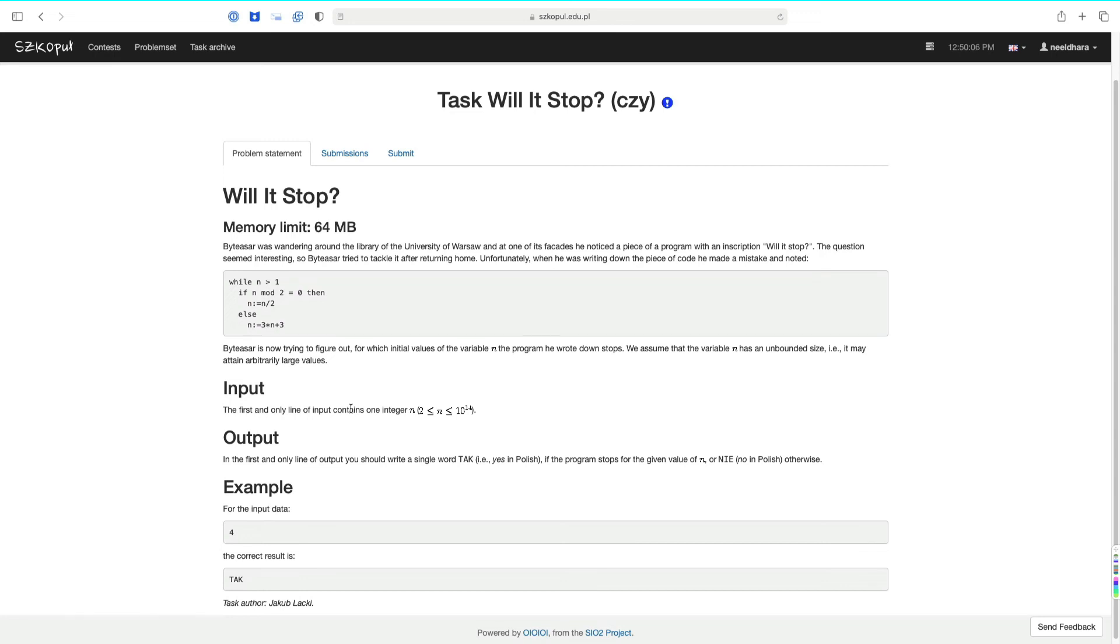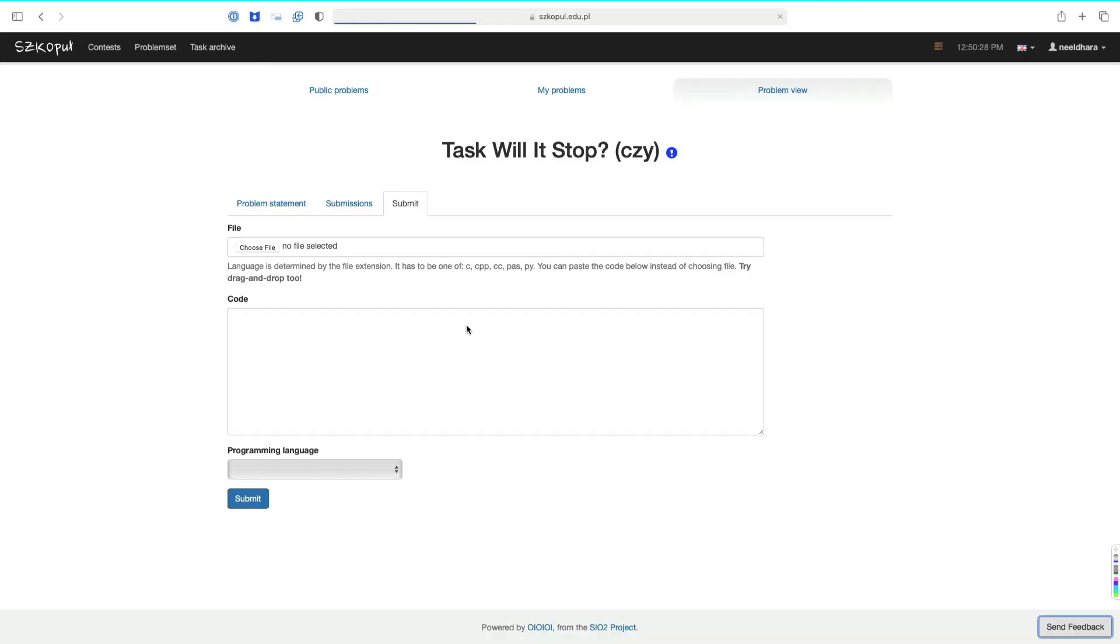Let's just quickly recap the problem statement. The contents of the problem itself are exactly as we have discussed. Let's take a note of the input. There's only one line of input and that's the integer n. And the output is yes or no, but notice that it's yes or no in Polish. So let's just take a note of the words. It's going to be tak or nie. Let's just make sure that that's what we output in our program. Otherwise, the tests are not going to pass. All right, so let's head over to the submission pane.